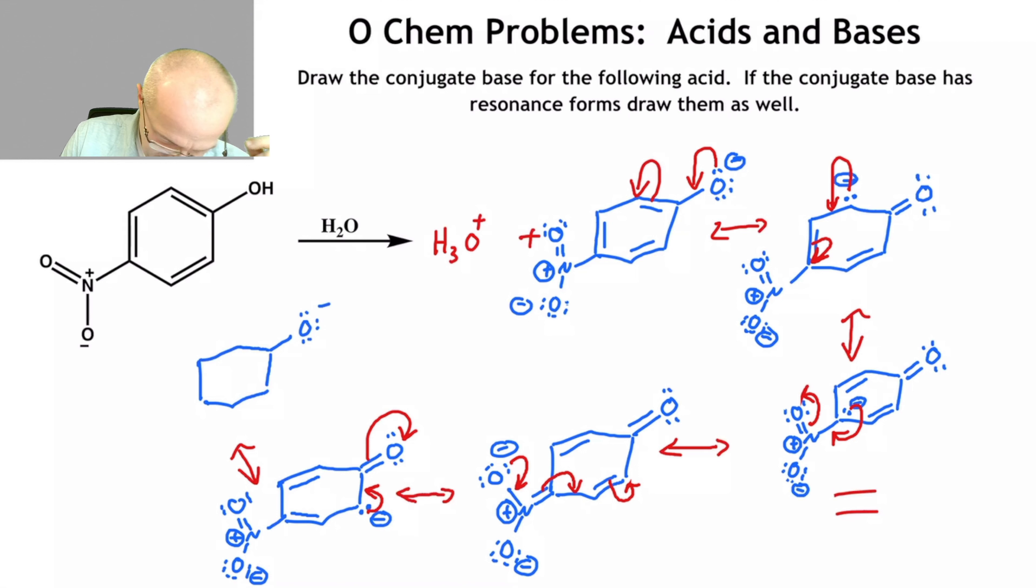And resonance forms with benzene in it are a favorite of organic chemistry professors to see if you really understand how resonance works. And there you go. So there's the conjugate base and all of its resonance forms.